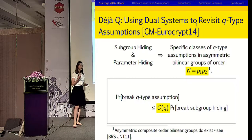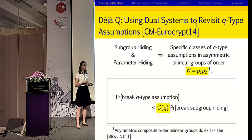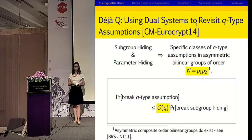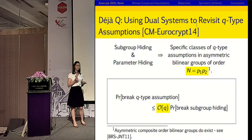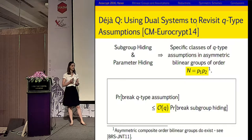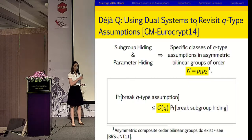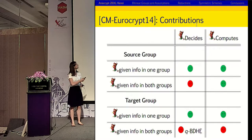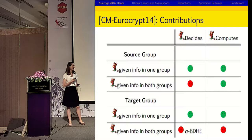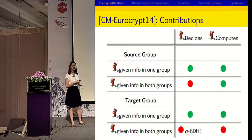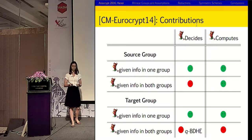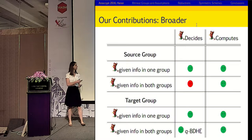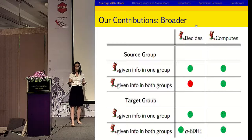Our work was essentially inspired by a paper a couple of years ago — the original DATAQ — by Melissa Chase and Sarah Meckeljohn. They managed to show that certain classes of Q-type assumptions are implied by subgroup hiding and parameter hiding when instantiated in composite order asymmetric bilinear groups. They got an upper bound showing that the probability an adversary breaks a Q-type assumption is less than order Q times the probability they break subgroup hiding. Note that this upper bound is a loose upper bound. They can't cover the situation where the adversary is given information in both groups and asked to compute or decide something in the target group, and this is specifically the setting we're trying to look at.